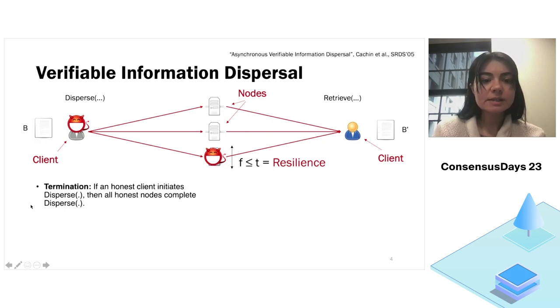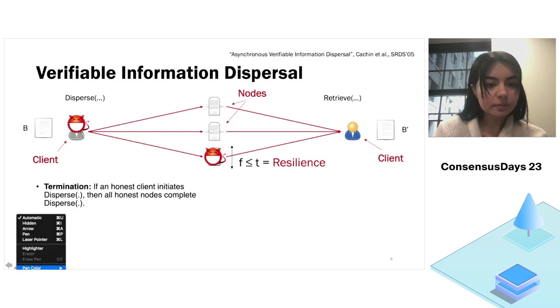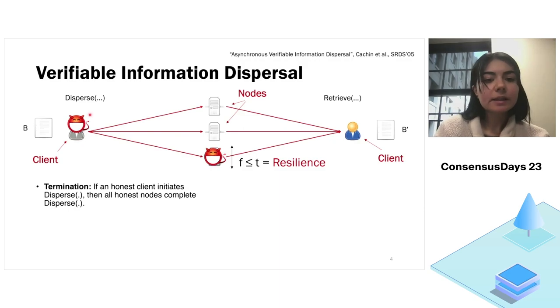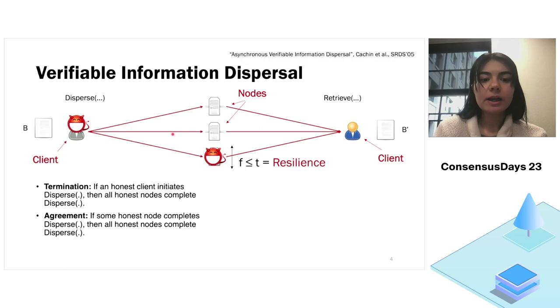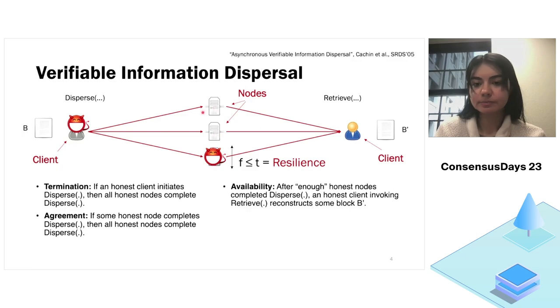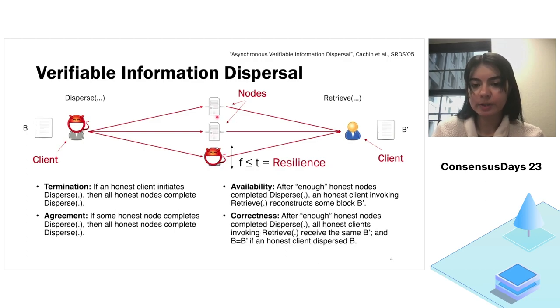So first is a termination property saying that if this client here is honest, and it invokes the disperse, then all nodes here, all honest nodes here will also complete the disperse. Agreement saying that if some honest node here completes the disperse, then all honest nodes will complete the disperse. Availability says that after enough nodes here complete the disperse, then if this client was honest and then invokes retrieve, it will reconstruct some block B prime. And correctness saying that again, after enough nodes here complete the disperse, all honest clients will always reconstruct the same B prime. And if this client here was also honest, then this B prime is the same as this B.